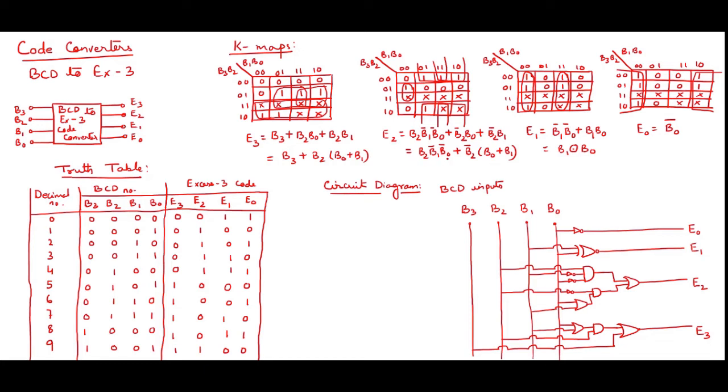Over here, I am getting 1 pair and 2 quads. I am ending with the equation for E2. That is B2, B1 bar, B0 bar plus B2 bar, B0 plus B1. Only common. Here I am getting in E1, 2 quads.